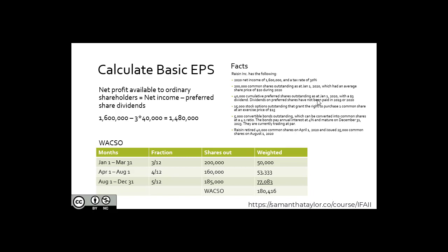Now let's look at WASO. From January 1st to March 31st — so for three-twelfths out of the year — we had 200,000 common shares outstanding. Three-twelfths times 200,000 equals a weighted average of 50,000 shares for that period. Then on April 1st, we retired 40,000 common shares, going from 200,000 to 160,000 shares outstanding until August 1st. For four-twelfths out of the year — April, May, June, July — four-twelfths times 160,000 equals 53,333.